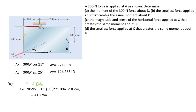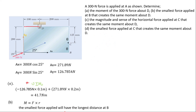The next question asks us to find the smallest force applied at B that creates the same moment. The smallest force corresponds to the longest perpendicular distance. We draw a line from B to D — that is the hypotenuse and represents the longest distance.